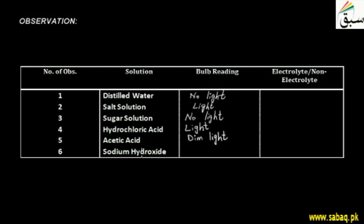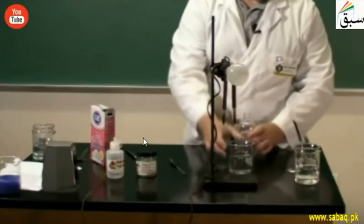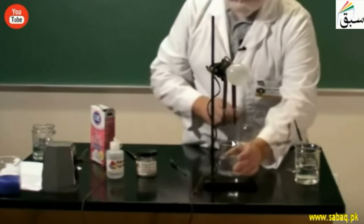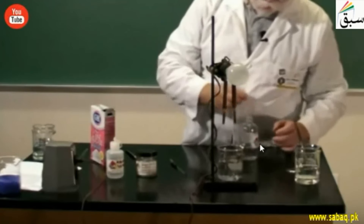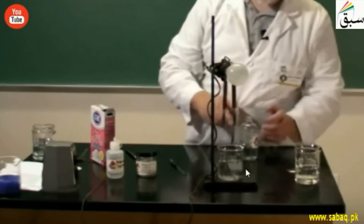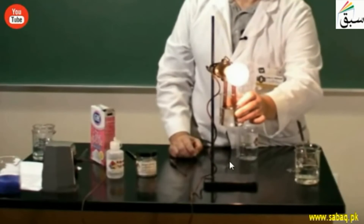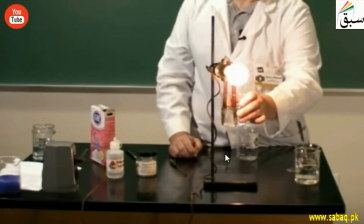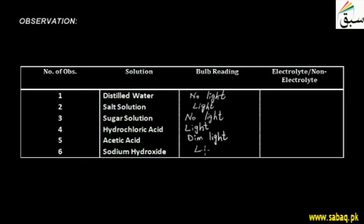Our next solution is sodium hydroxide solution. We have taken sodium hydroxide and put a few drops into distilled water. When we dip the carbon electrodes, we see bright light. The bulb turned on — the bulb reading is light.